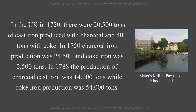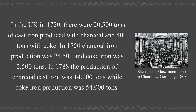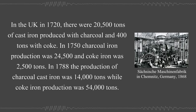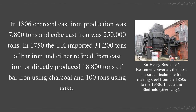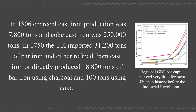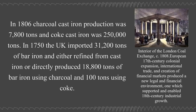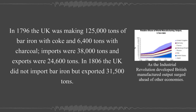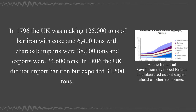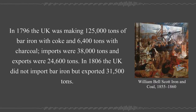In 1780, the production of charcoal cast iron was 14,000 tons. In 1806, charcoal cast iron production was 7,800 tons and coke cast iron was 250,000 tons. In 1750, the UK imported 31,200 tons of bar iron and either refined from cast iron or directly produced 18,800 tons of bar iron using charcoal and 100 tons using coke. In 1796, the UK was making 125,000 tons of bar iron with coke and 6,400 tons with charcoal; imports were 38,000 tons and exports were 24,600 tons. In 1806, the UK did not import bar iron but exported 31,500 tons.